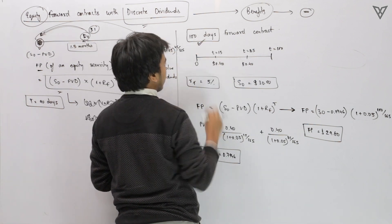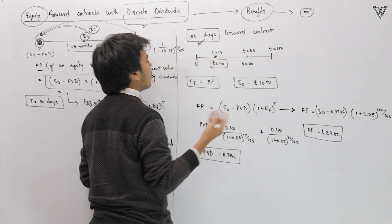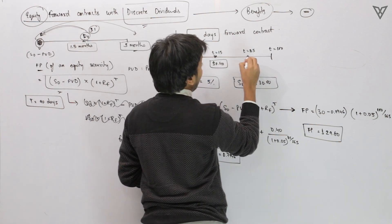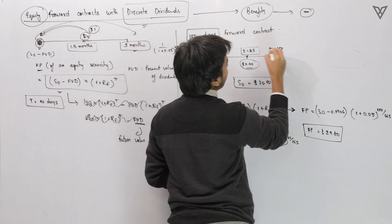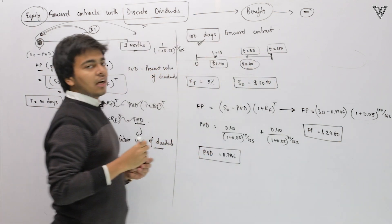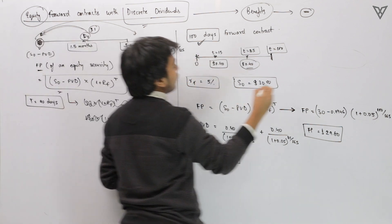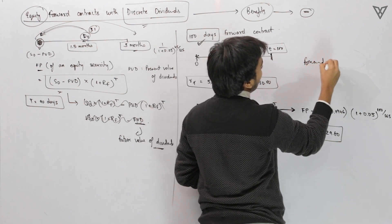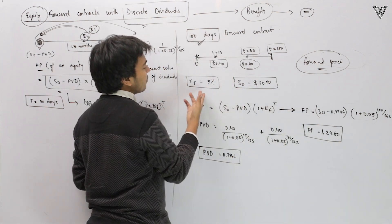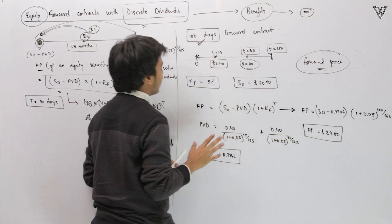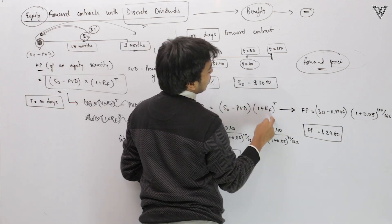It is a 100-day forward contract. After 15 days the equity security pays a dividend of $0.4, and on the 85th day there is another dividend of $0.4. The contract expires on the 100th day. Standing at time period 0, you need to calculate the forward price. We have a risk-free rate of 5% and a spot price of $30.